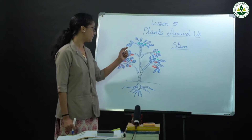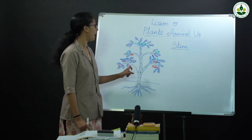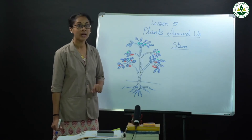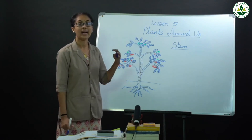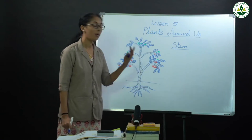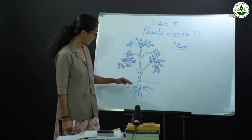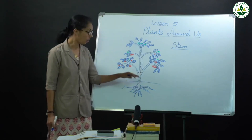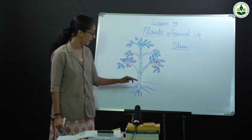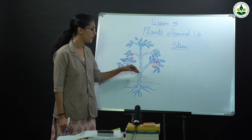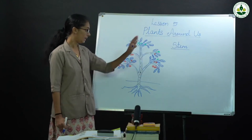Another function of the stem is that it transports water and minerals absorbed by the root to other parts of the plant. The root absorbs water and nutrients from the soil, and the stem transports those nutrients to the other parts of the plant.